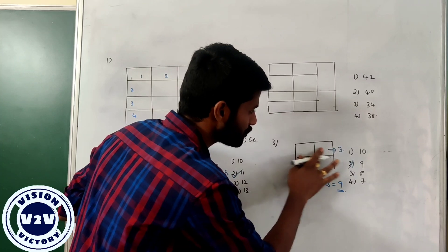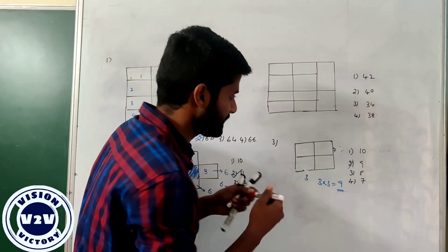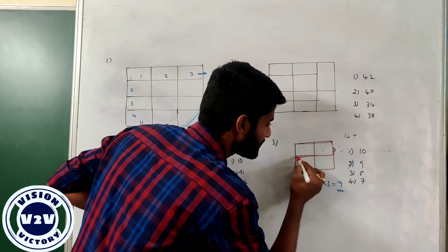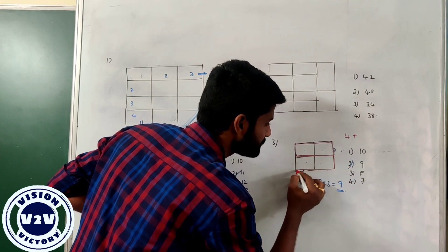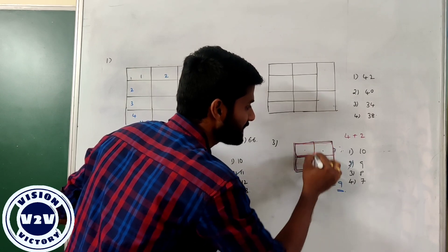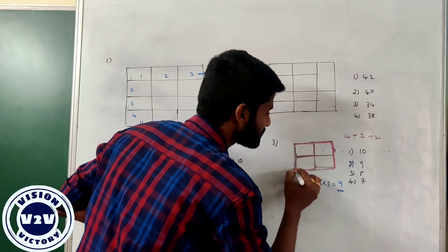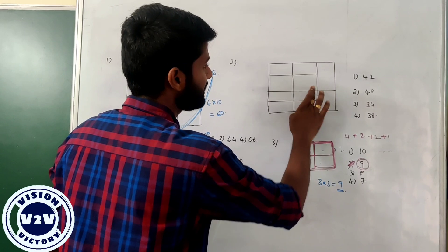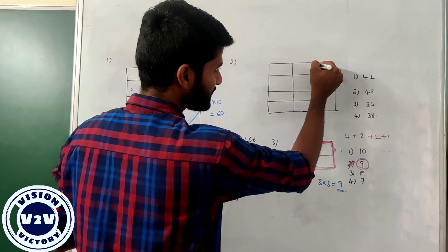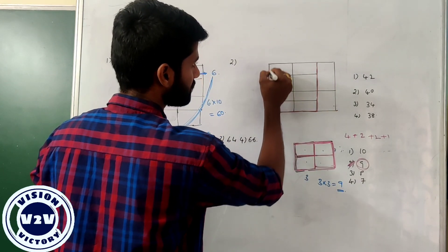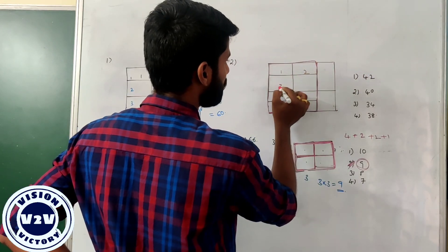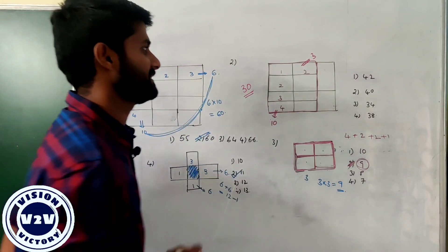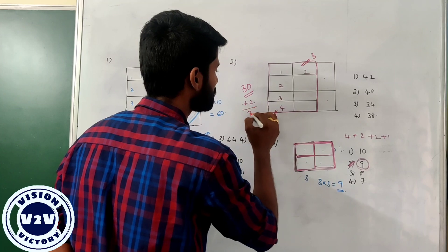Here the option is 9. I will show you the total 9 rectangles. The smaller individual boxes: 1, 2, 3, 4 — every box I can call a square or rectangle, that is 4. Joining together: this is portion 1 and this is portion 2 — that is 2 more. Adding this box: 1 and 2 — again we have 2. The entire box counts as 1. Total counting gives 9 rectangles. For this particular figure: 1, 2 horizontal and 1, 2, 3, 4 vertical — the total multiplication gives 10 times 3: three tens are 30. Plus this is box 1 and box 2: 30 plus 2 gives 32 rectangles.